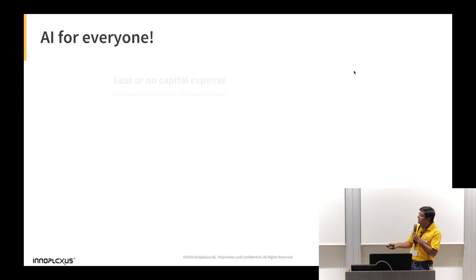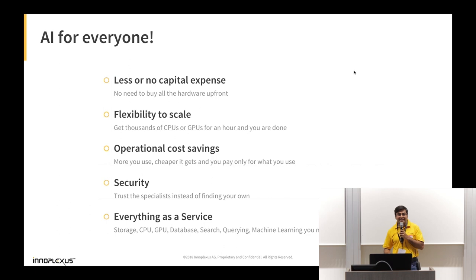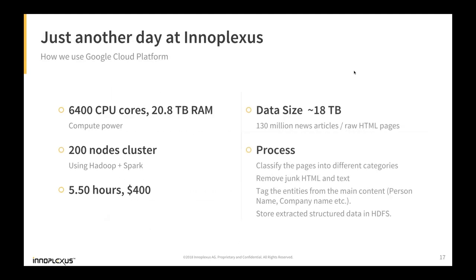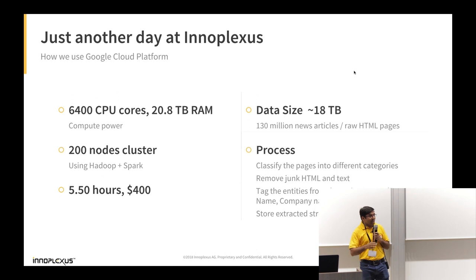Why we use cloud: as a startup we could take on giants head-on because we did not have to invest significantly in infrastructure. We could rely on cloud and do things like — for just $400 — get 20 terabytes of RAM, process 130 million news articles: classifying into different categories, picking out entities, identification, disambiguation — everything. And all of it in about 6 hours, with some manual intervention required, otherwise even less.